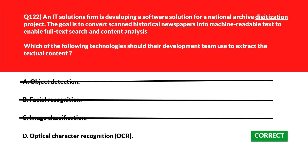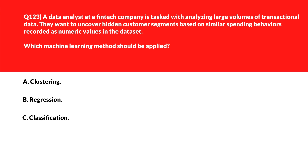We'll lock option D, OCR, as the right answer. Now let's tackle the next question — this is all about similar spending behaviors recorded in numerical values. When it comes to numerical values, you might already be guessing the answer. Option A is Clustering — clustering finds natural groupings in data using similarity in numerical values without relying on predefined labels — let's keep this.